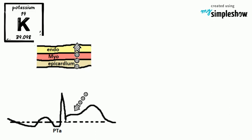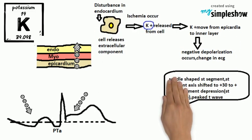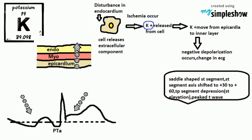Increased pressure in the epicardium also affects the entire heart. As a result of increased atrial pressure, movement of electrolytes occurs in the opposite direction, and P wave downsloping occurs in the ECG.